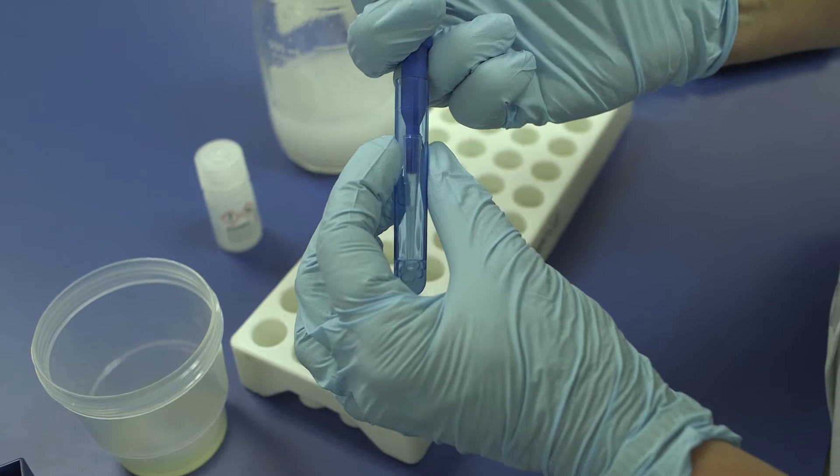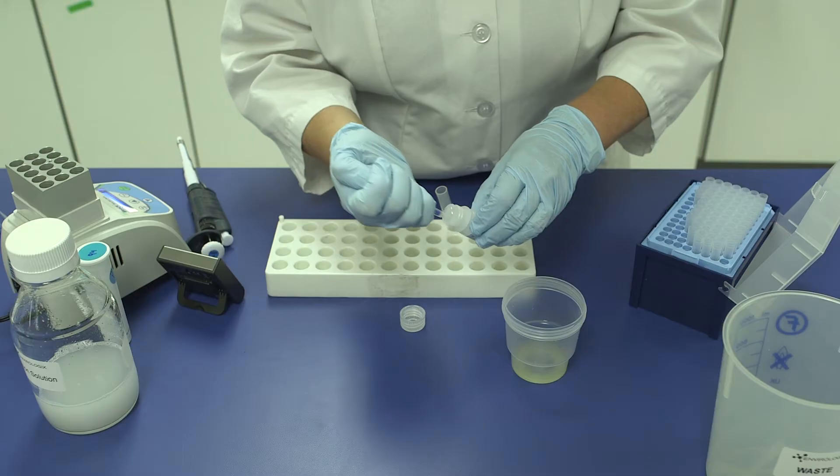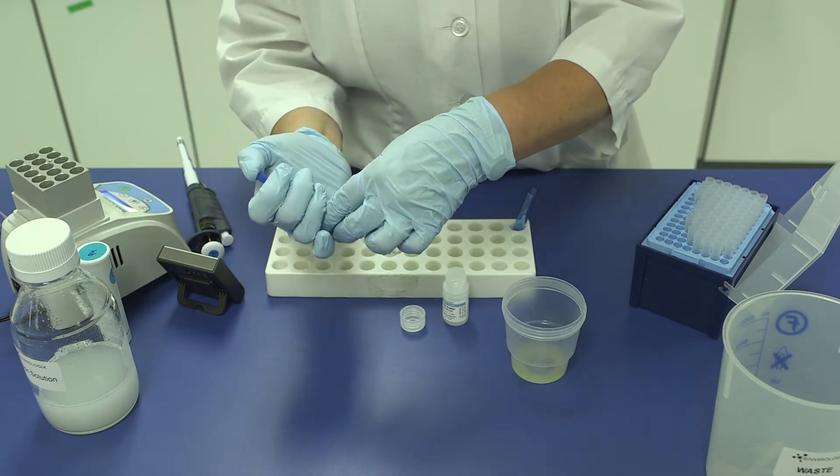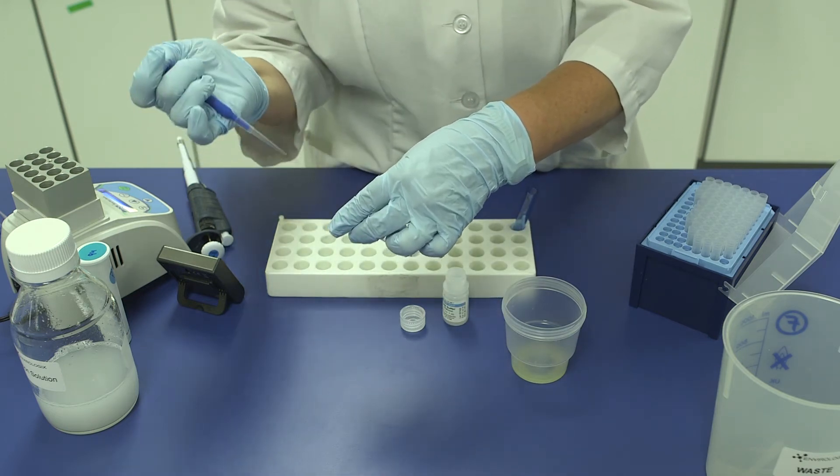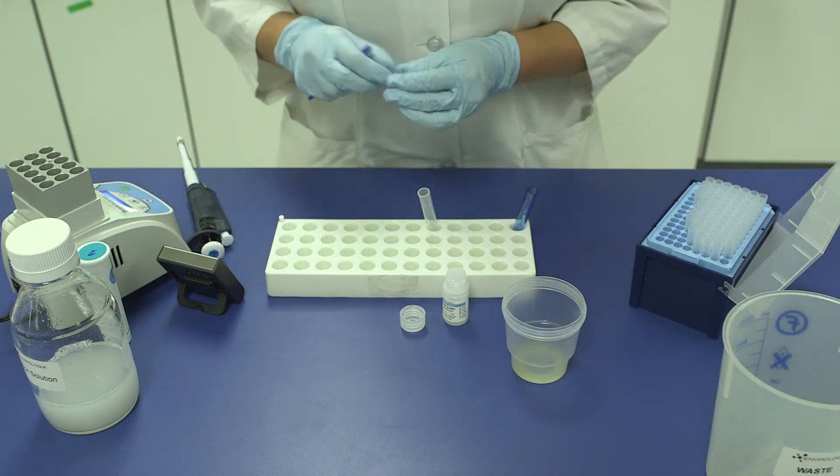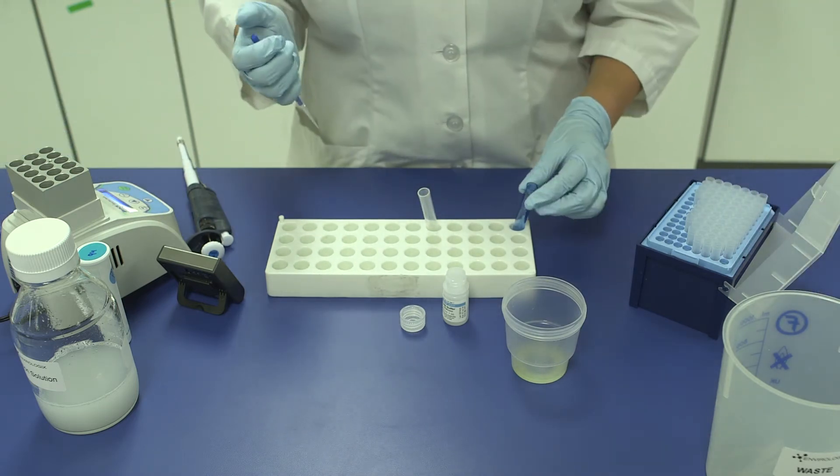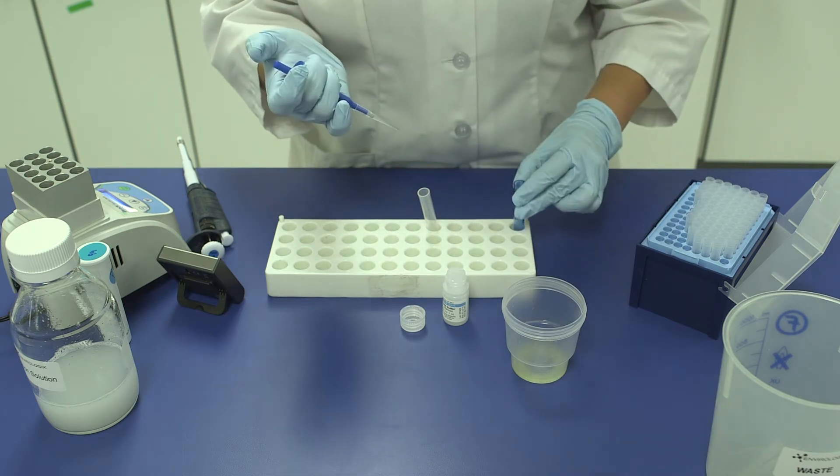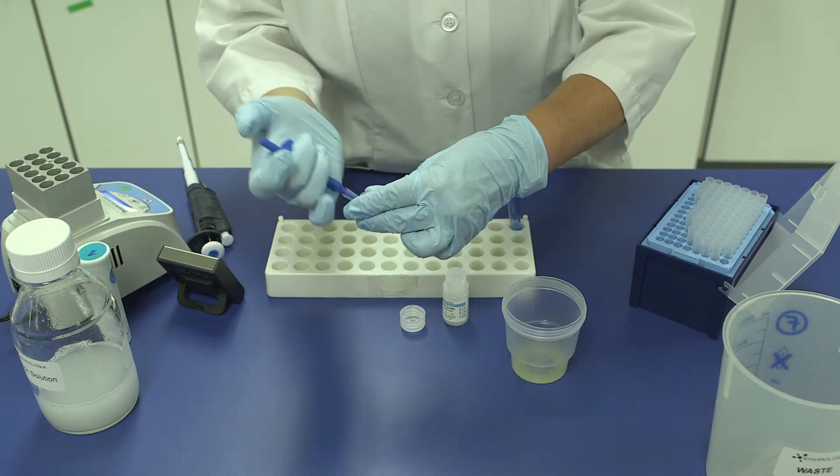Save this diluted extract in case further dilution is needed. Step 2. Pipet 100 microliters of DB5 buffer and 100 microliters of the diluted extract from Step 1 into a new reaction tube. Mix well.